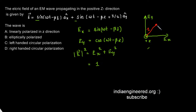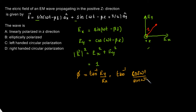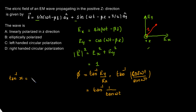Since the amplitude is constant, if the phase is a function of ωt, the polarization will be circular. The phase φ = tan⁻¹(Ey/Ex) = tan⁻¹(cos(ωt) / sin(ωt)) = tan⁻¹(1/tan(ωt)). Using the identity tan⁻¹(x) = π/2 − cot⁻¹(x), we can evaluate how the phase evolves with time.